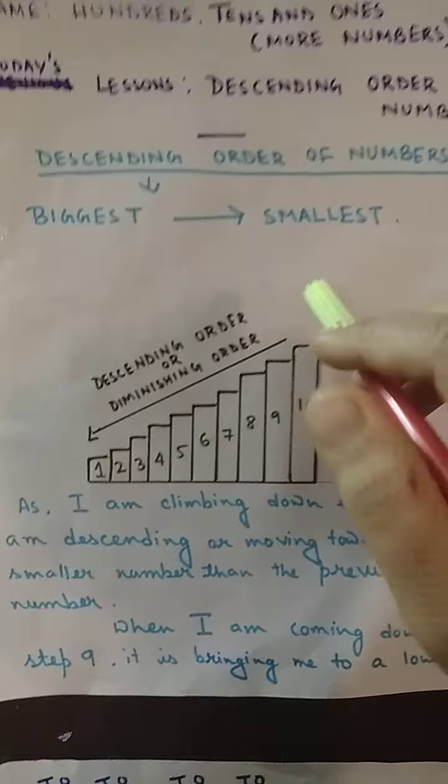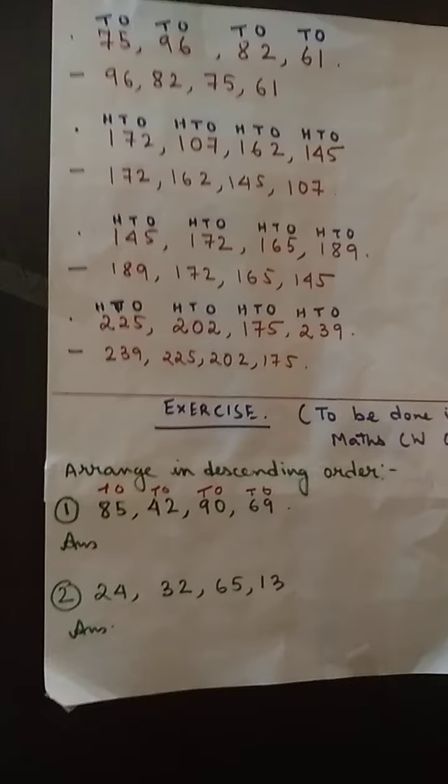After this, take out your Math CW copy. I have given you a small exercise to do. The first question is: 85, 42, 90, and 69. Number 2 is: 24, 32, 65, and 13. Students, please don't forget to write T, O, T, O — with small letters on top of each number. This will help you to compare the numbers and understand. Parents, please make sure students write this when learning ascending and descending order, otherwise they might get confused.